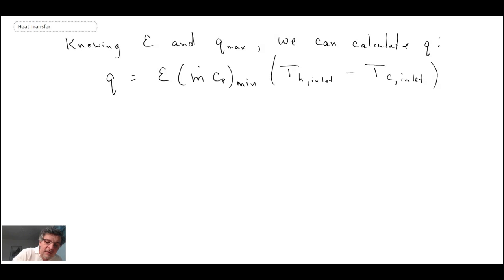Other terms to use, or the terms that are common in the effectiveness NTU method, we've already talked about the minimum fluid, but we define that as being C min and C max. And we'll also look at the ratio of these two, but we won't do it here. We'll do that later on. Other things we have, NTU, those are number of transfer units.